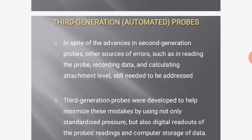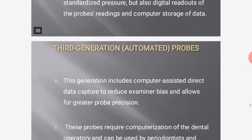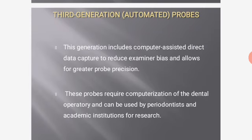Third generation automatic probes address additional sources of error in second generation probes, such as errors in reading the probe, recording data, and calculating attachment level. These probes minimize mistakes by using standardized pressure along with digital readouts and computer storage of data. This generation includes computer-assisted direct data capture to reduce examiner variability and allows for greater probe precision. They require computerization of the dental operatory and are used by periodontists and academic institutions for research.